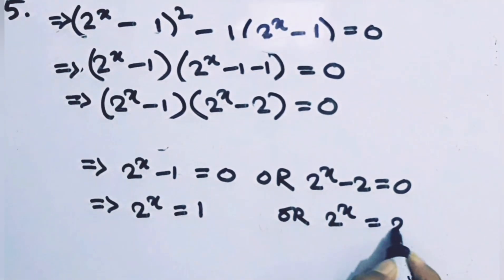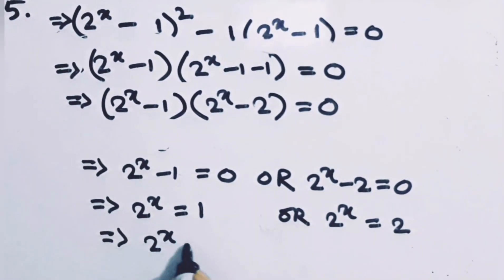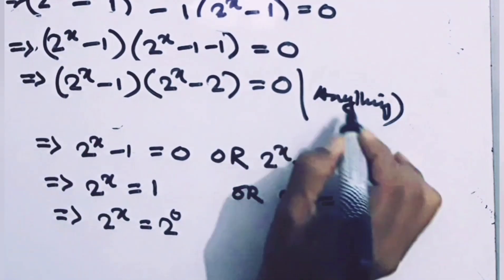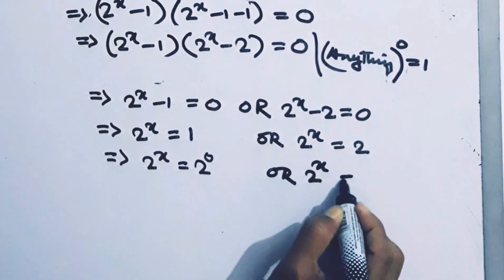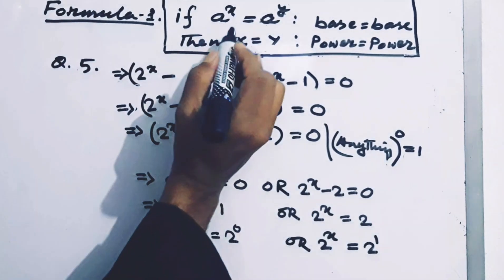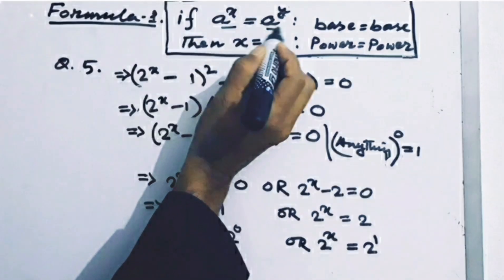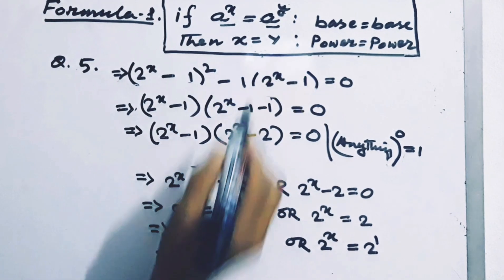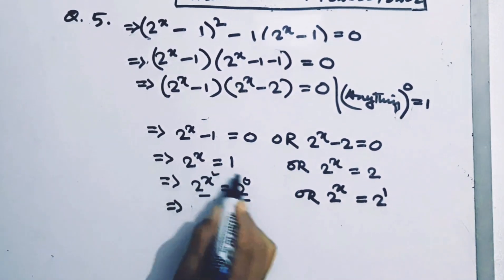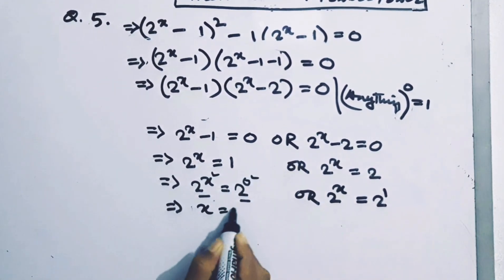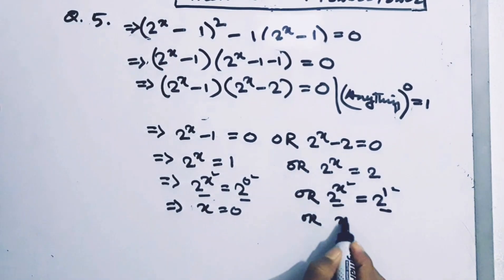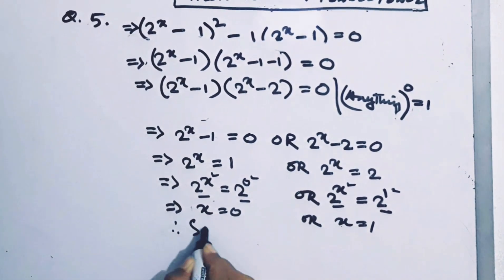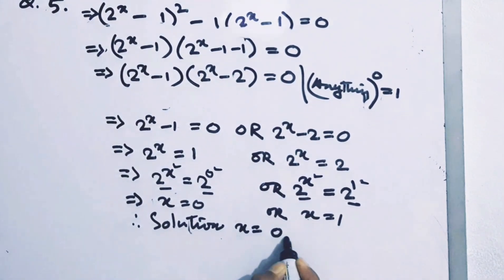This implies 2 to the power x equals 2 to the power 0 (since anything to the power 0 equals 1), or 2 to the power x equals 2 to the power 1. According to the exponential formula, if base equals base then power equals power. Here base 2 equals base 2, so the powers are equal: x equals 0, or x equals 1. Mission complete. The solution of the exponential equation is x equals 0 or x equals 1.